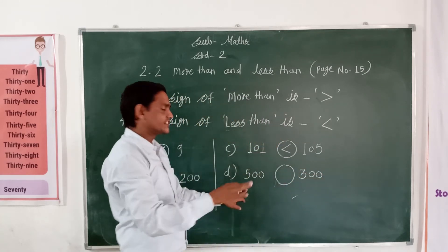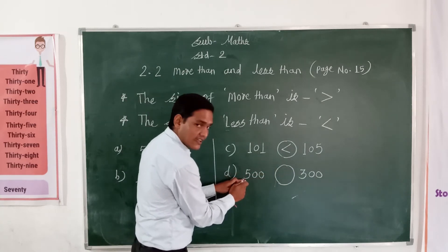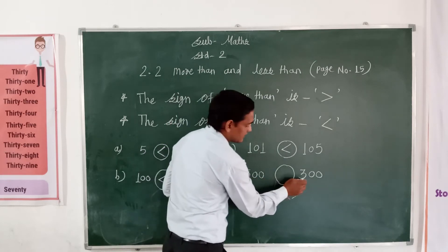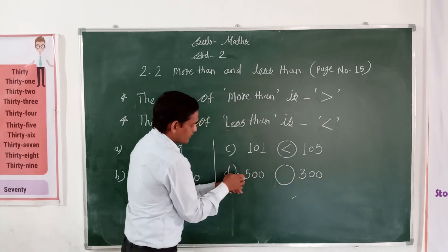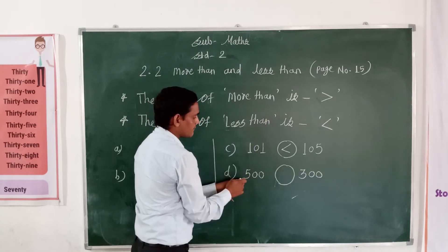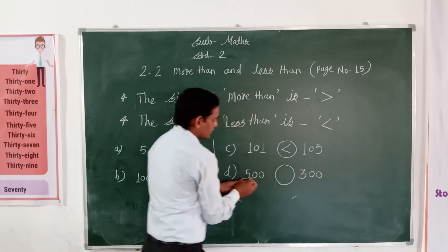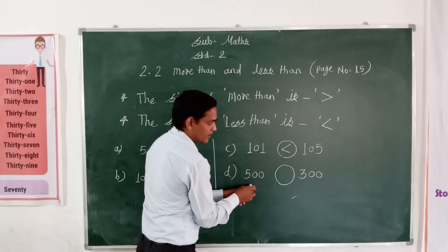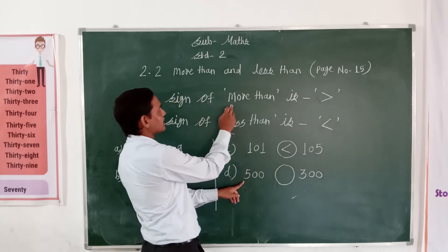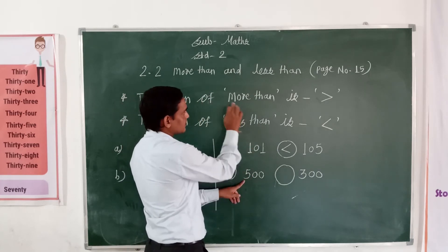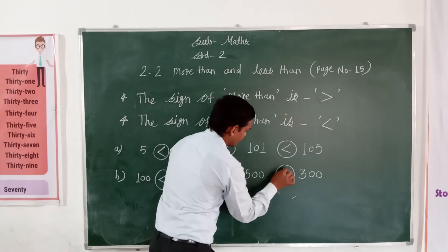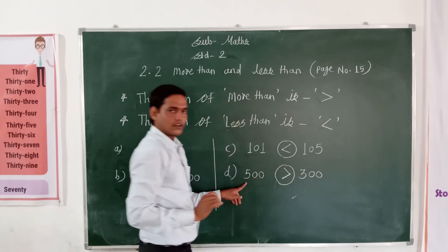Now the numbers have changed. The first number is 500 and the second number is 300. So 500 is the bigger number — more means greater — and 300 is the smaller number. So the first number is more than the second number. Write down here: 500 is more than 300.